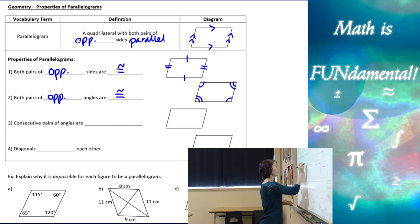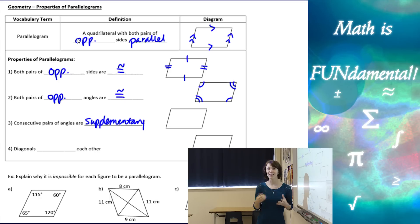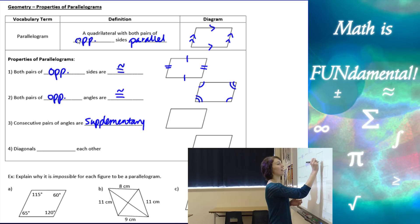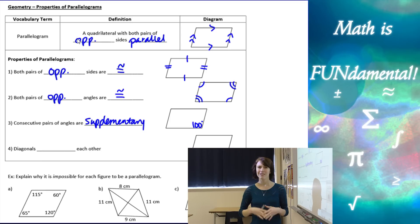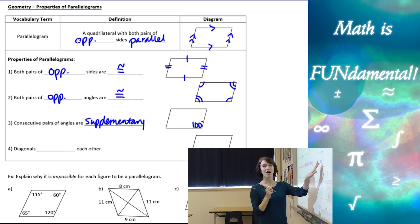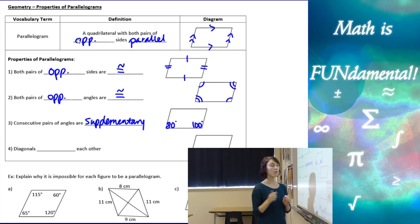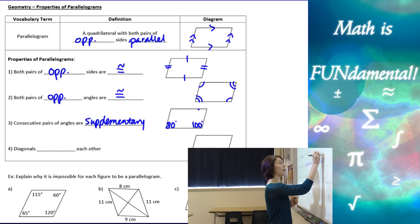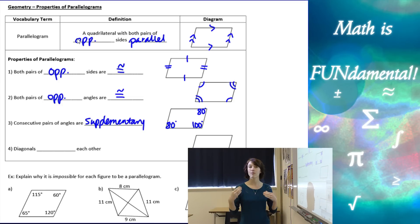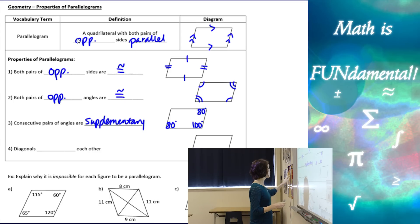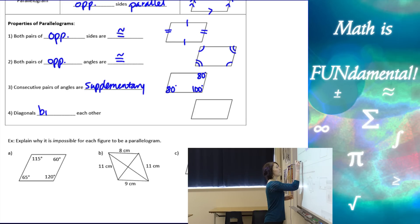The third property: consecutive pairs of angles have to be supplementary. Consecutive means angles that are next in line or next to each other. If we have 100 degrees here, there are two angles consecutive to it — the one next to it, which would be 80 degrees since they're supplementary, and also the angle on the other side. You want to make sure both of those consecutive angles are supplementary.